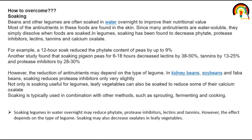These anti-nutritional factors — phytate, protease inhibitors, lectins, tannin, calcium oxalate — get reduced through soaking. For example, soaking for 12 hours can reduce the phytate content of peas by up to 9%. Soaking for 6–18 hours can reduce lectin concentration by 38–50% and tannin by 13–25%. However, the reduction depends on the type of legumes. In kidney bean, soyabean, and faba bean, soaking reduces protease inhibitors only very slightly.